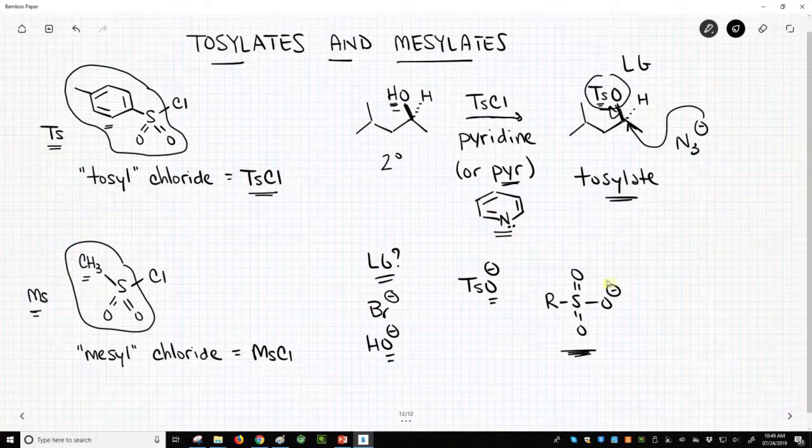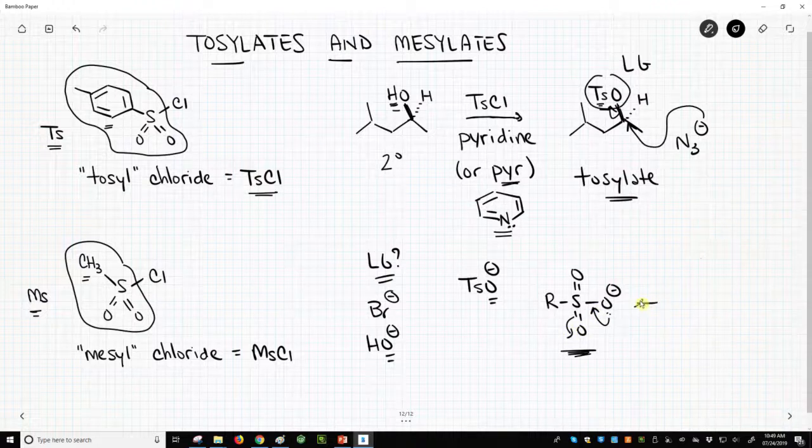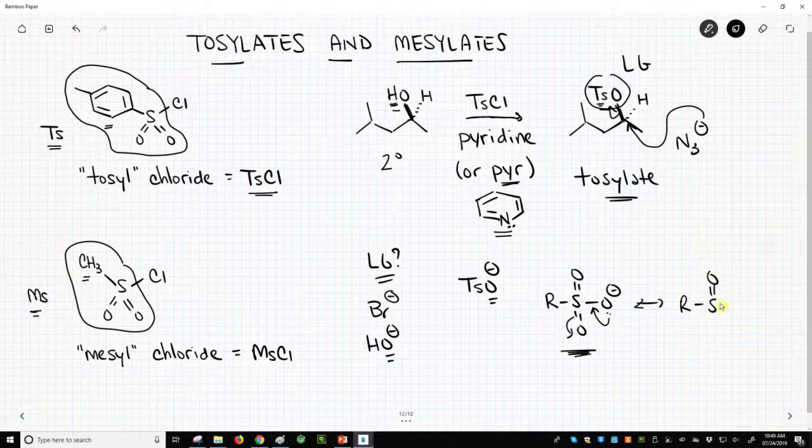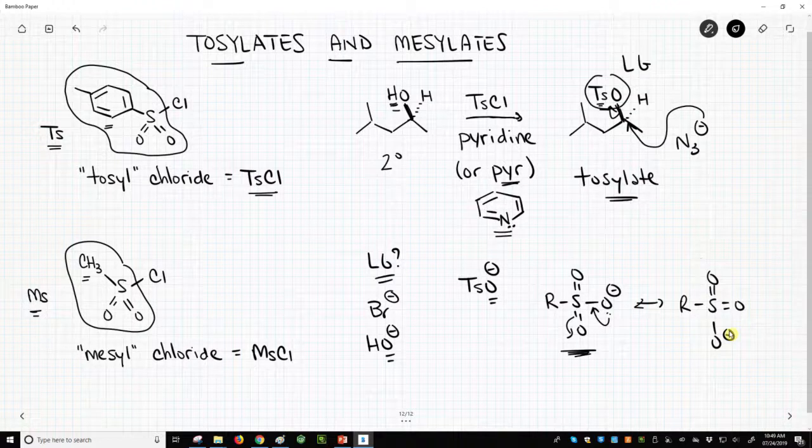This is our leaving group. Why is that so stable? Well, there's a lot of resonance that we can draw because of these neighboring sulfur oxygen bonds. That gives us a lot of delocalization to charge and makes this anion really stable.